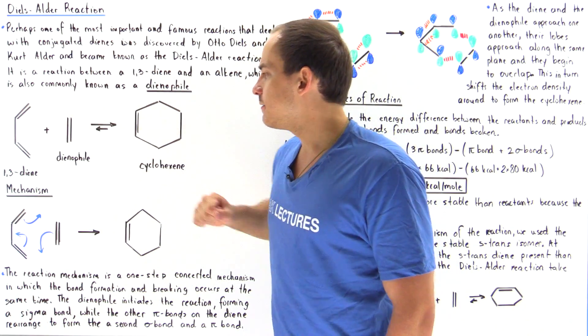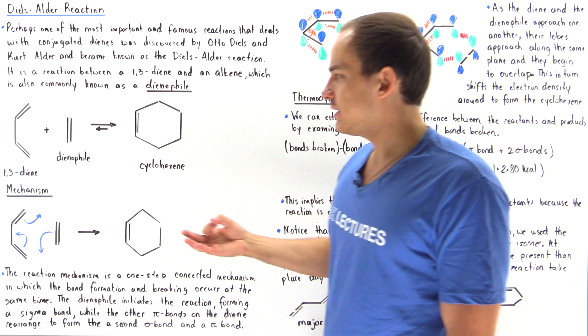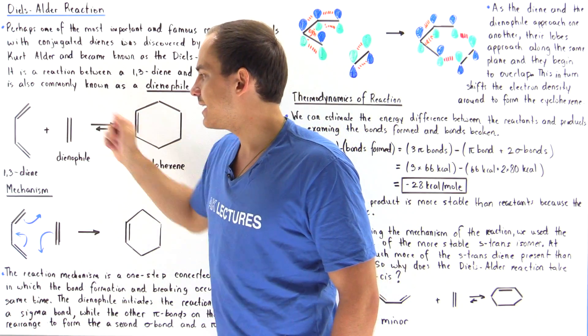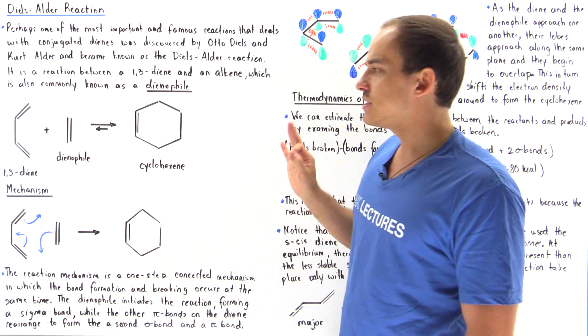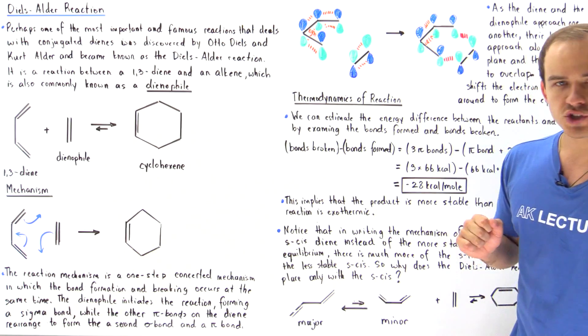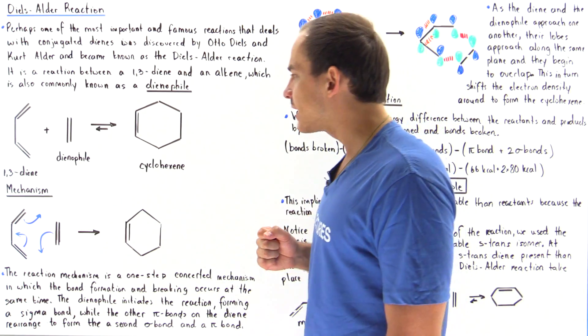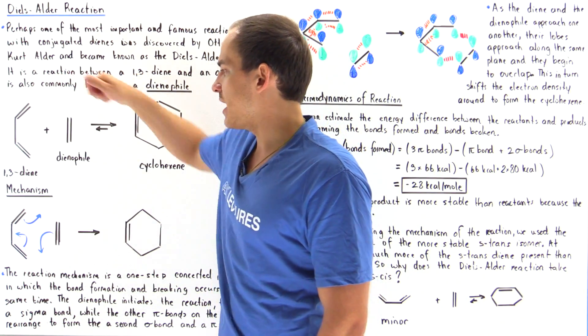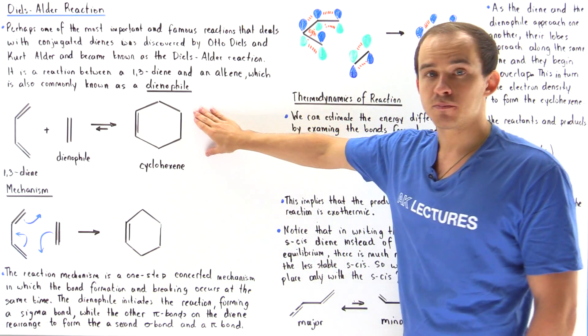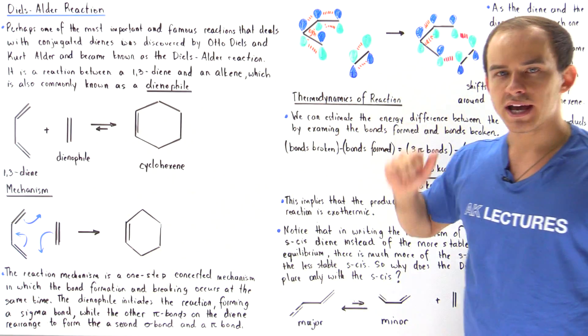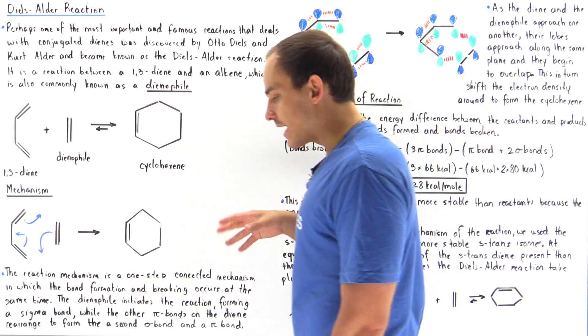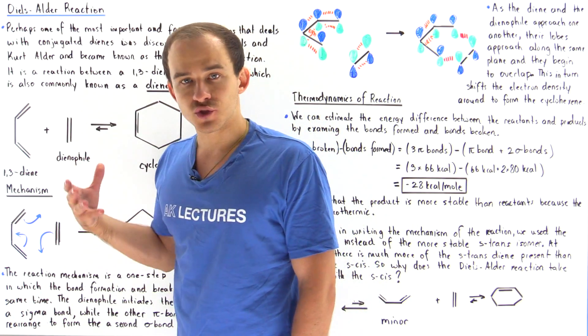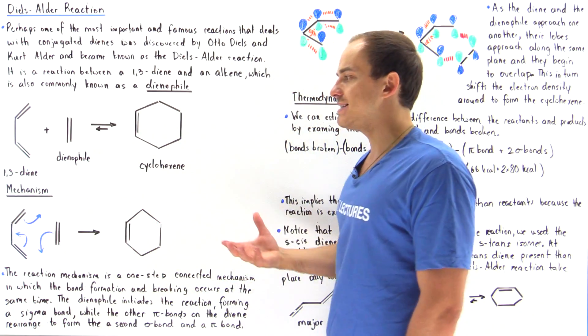So our dienophile is basically an alkene. This is a diene. Now the reaction takes place via a specific type of mechanism. They react to form the following product, our cyclohexene. So in this lecture we're going to introduce this reaction and discuss the basics of it.